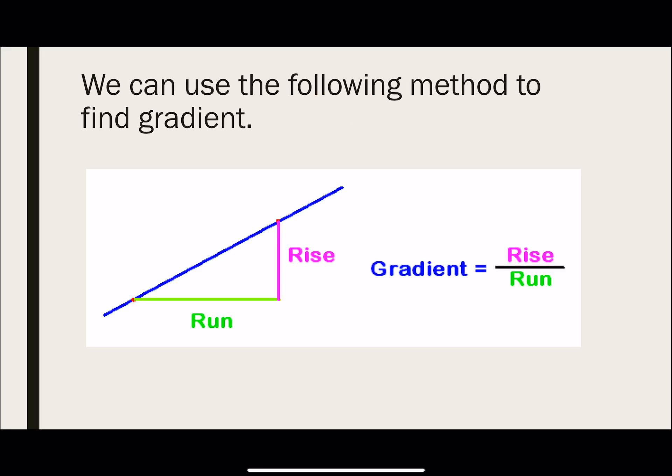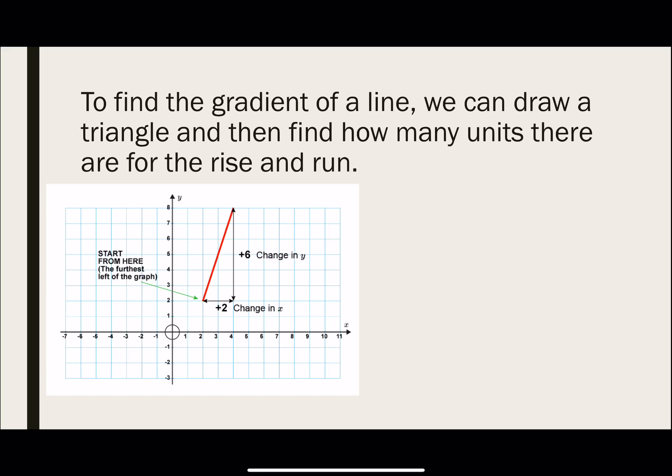So we can use the following method to find gradient, which is just rise over run. This tells us how steep the line would be. So in this diagram, you will notice that I have a line segment that's in red. And what we can do is that we can draw a triangle, and we can figure out how many units there are for the rise and for the run. So the rise in this diagram, as you can see, is 6 units. That's the vertical rise. For the horizontal run, you have 2 units. Gradient is rise over run. So what we have is 6 over 2, and we get the value of 3.